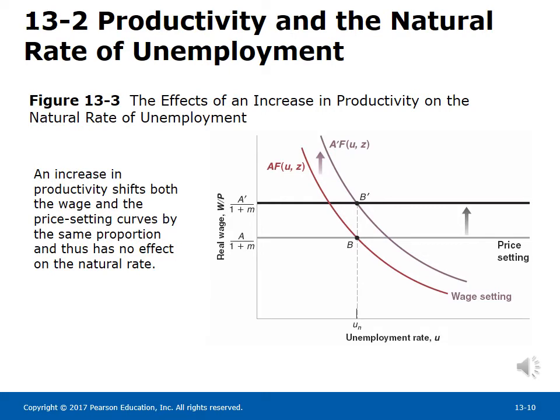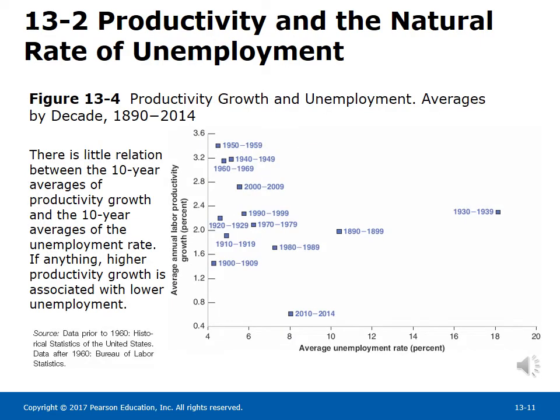13-2 Productivity and the Natural Rate of Unemployment. Figure 13-3 shows the effects of an increase in productivity on the natural rate of unemployment. An increase in productivity shifts both the wage and the price-setting curves by the same proportion and thus has no effect on the natural rate. Empirical evidence from Figure 13-4 shows productivity growth and unemployment averages by decade. There is little relation between 10-year averages of productivity growth and the 10-year averages of the unemployment rate. If anything, higher productivity growth is associated with lower unemployment.